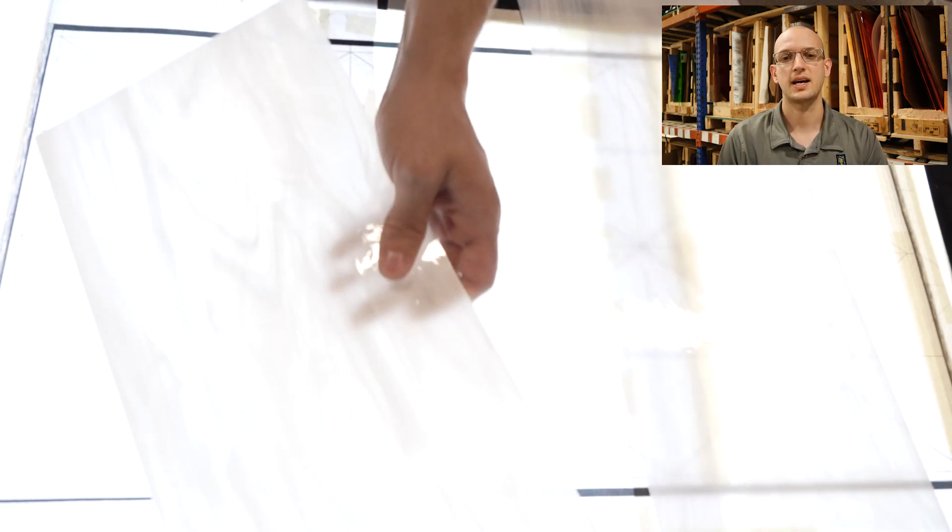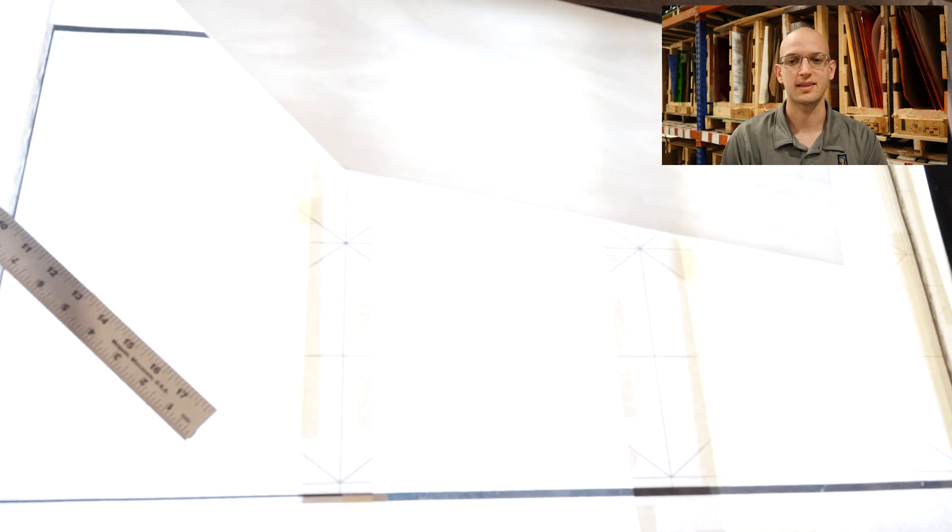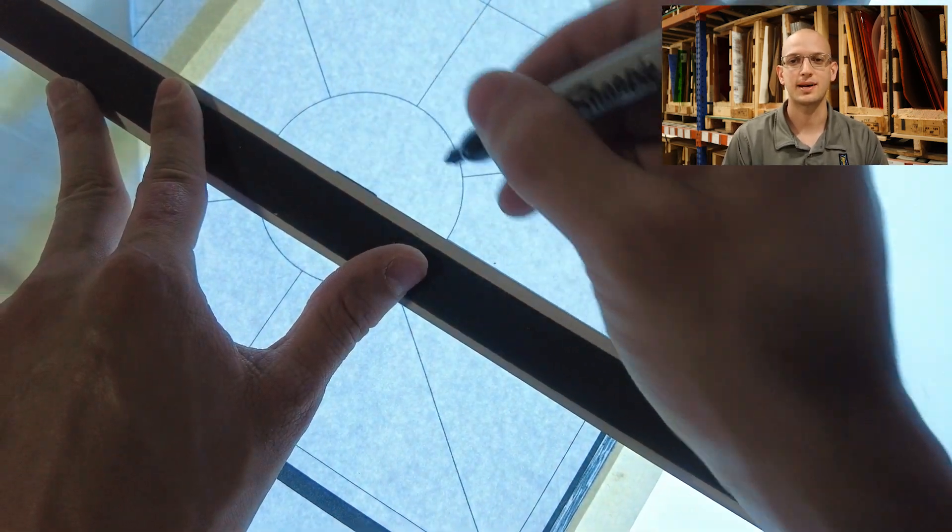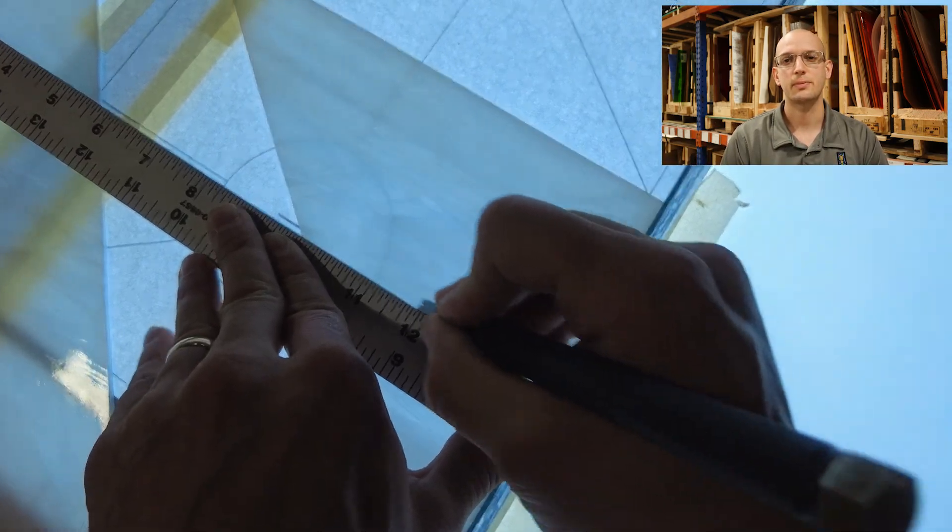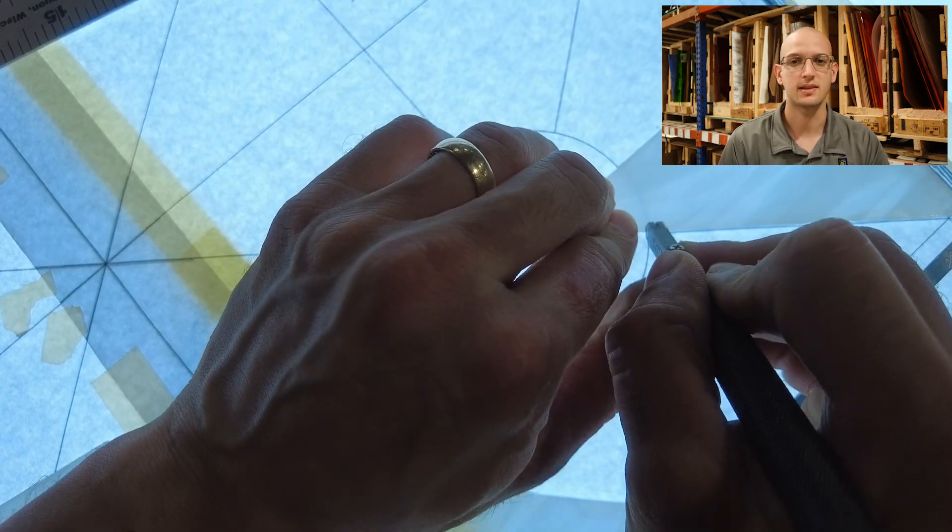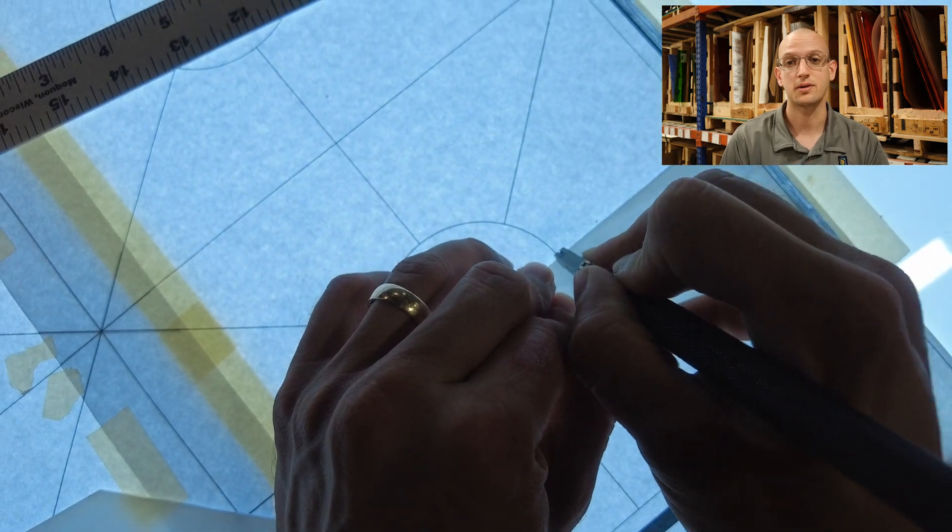We're going to get started chopping down these big sheets into workable sizes. These 48 inch straight edges are the real MVPs of this step. Now this design does have exactly symmetrical sections, so what you'll see throughout the cutting process is that I'll be cutting on the same portion for multiple pieces. That's also why you'll see me reaching across filling up other parts of the pattern.